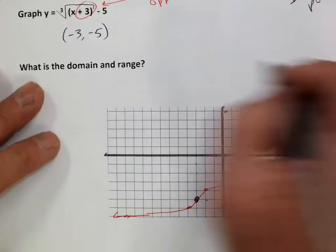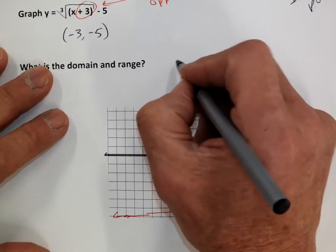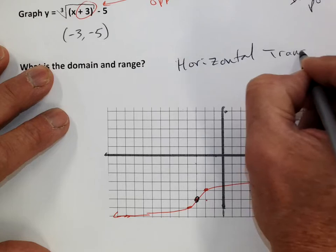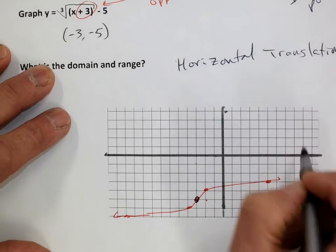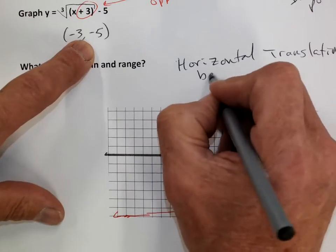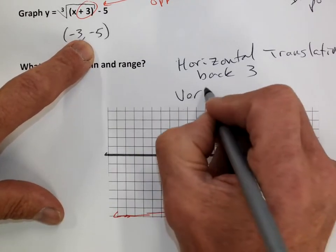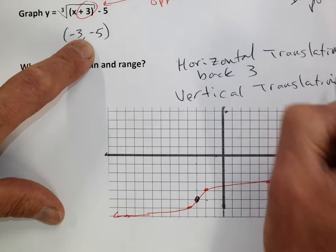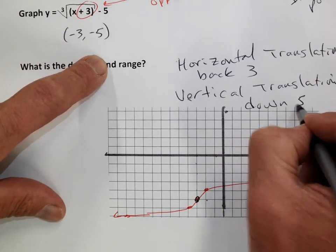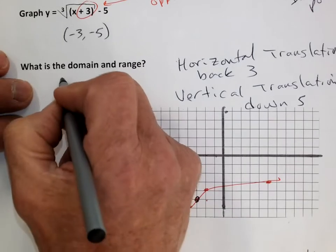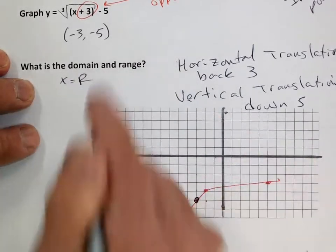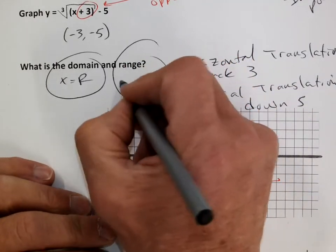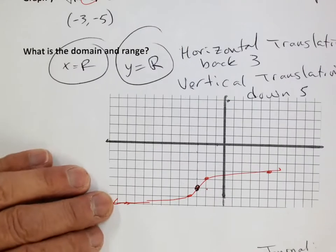Domain and range: that's easy — all real numbers, because look how wide it is, going forever. The range will go up forever and down forever — it's just going to take a long time to get there. So y is equal to all real numbers as well. Your homework is out of your journal; it's not a very difficult assignment. In Zoom we'll talk more about these.